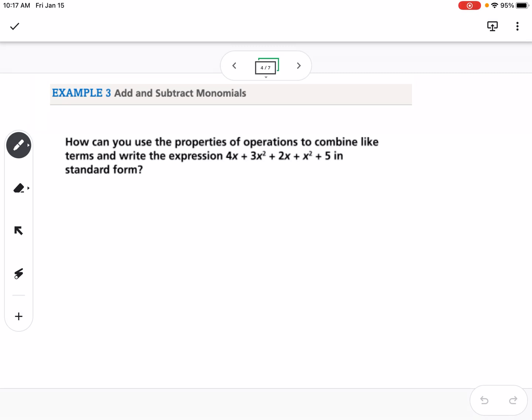Okay, so next is how can we add and subtract monomials, so terms within our polynomial. So we have 4x plus 3x squared plus 2x plus x squared plus 5. How can we combine terms and write it in standard form? So let me use colors here.